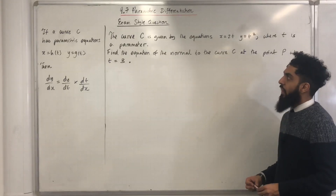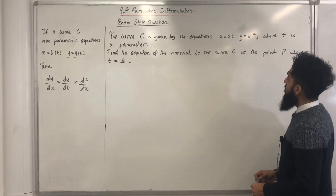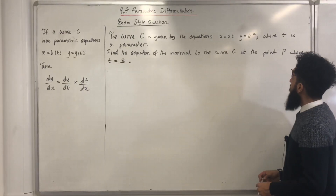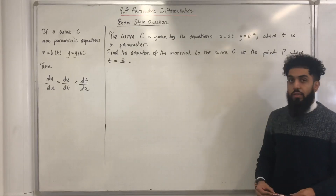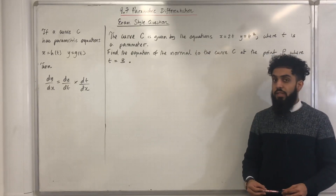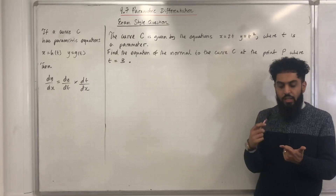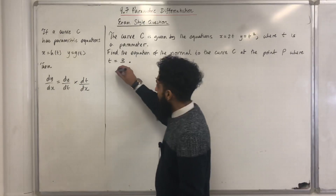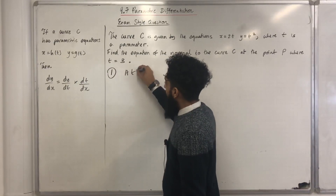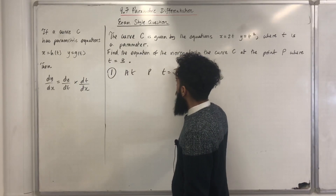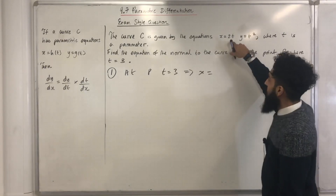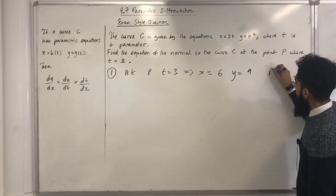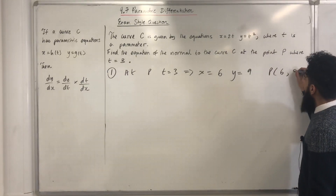Here's another example question. The curve C is given by the equations x equal 2t, y equal t squared, where t is a parameter. Find the equation of the normal to curve C at the point P, where t is equal to 3. Step number 1: work out the coordinates at P. At P, t is equal to 3, which implies x is equal to 2 times 3, which is 6, and y is equal to 3 squared, which is 9. So the coordinates of P are 6 and 9.